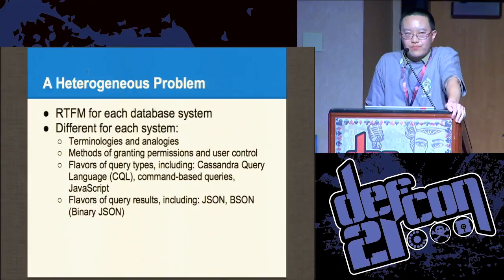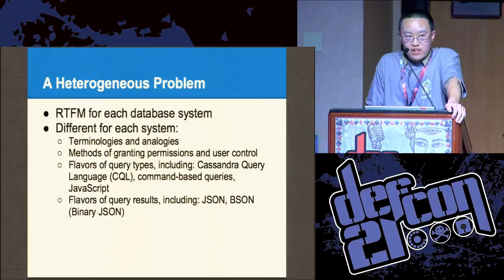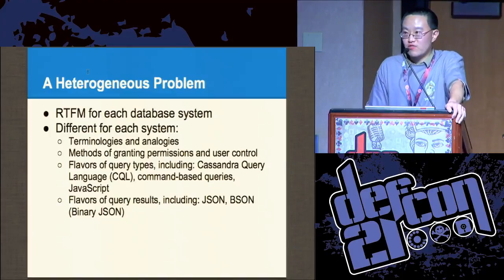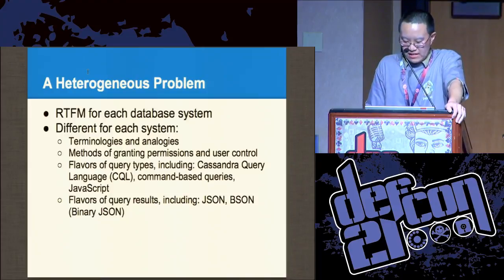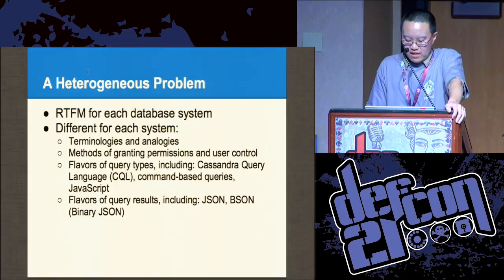Heterogeneous problems — how many NoSQL databases are there? There's many, too many to name. The big problem is different NoSQL database systems have different sets of terminology. For example, in Mongo the concept of a table is a collection and a record is a document. It's completely different in Cassandra. Redis is just key-value pairs. And different systems like CouchDB support different output formats as well.